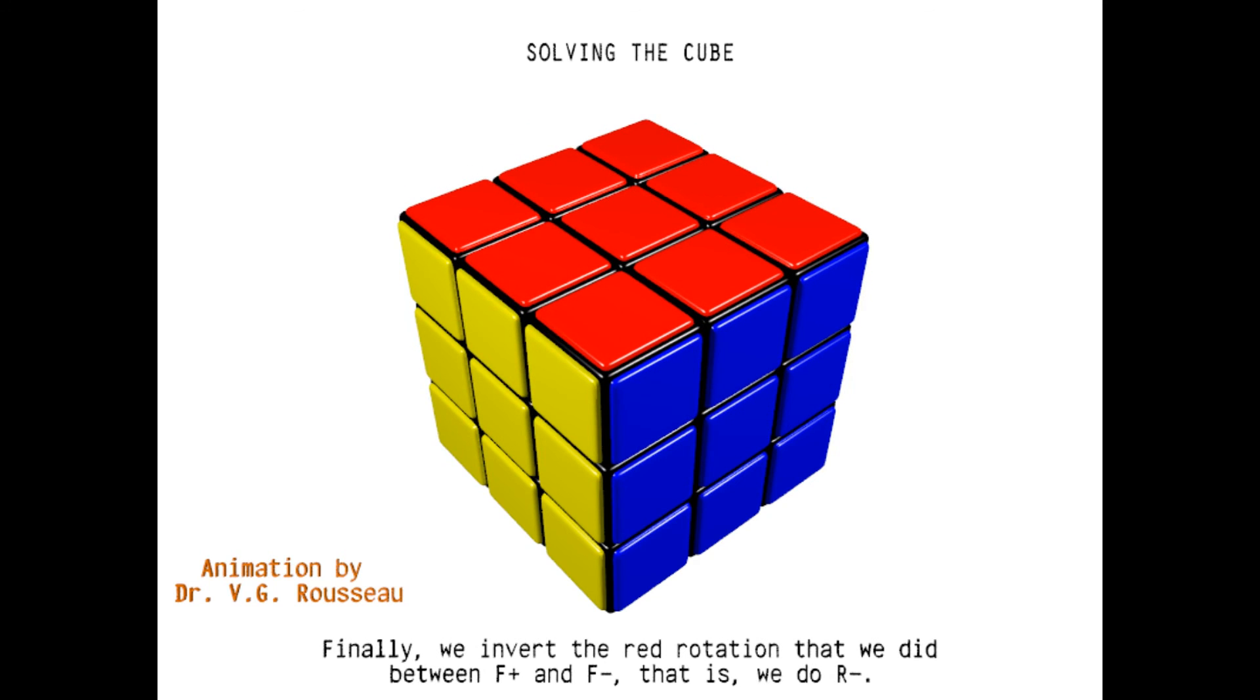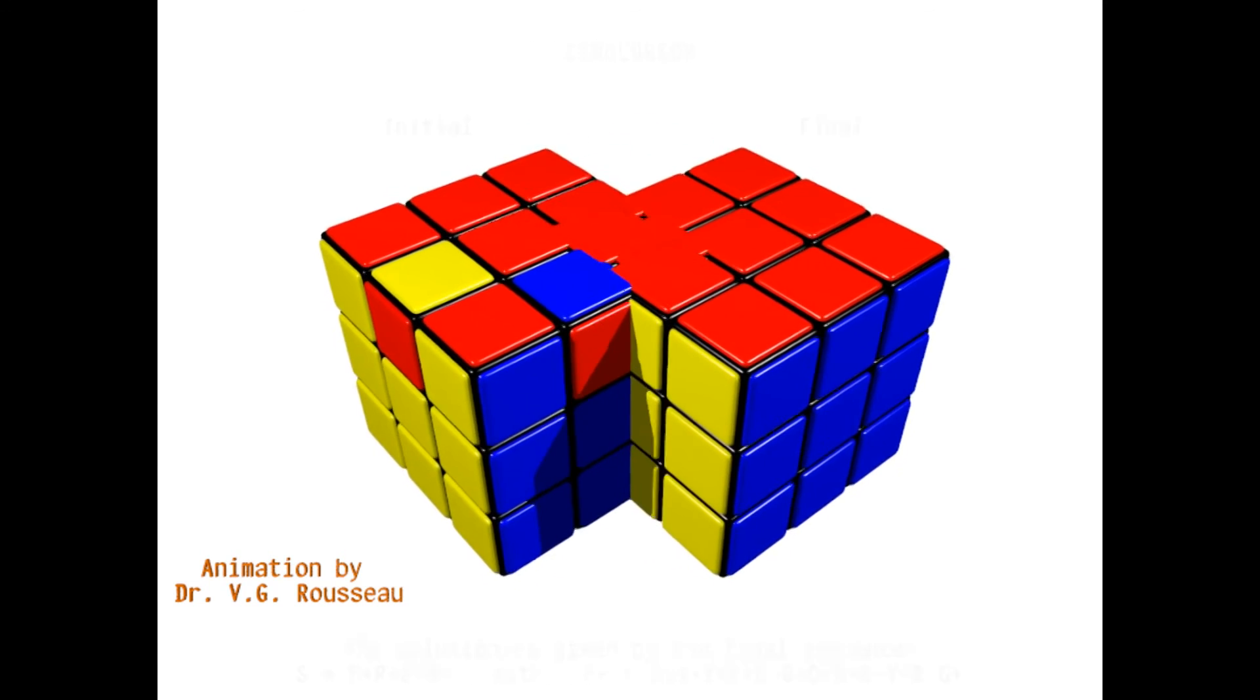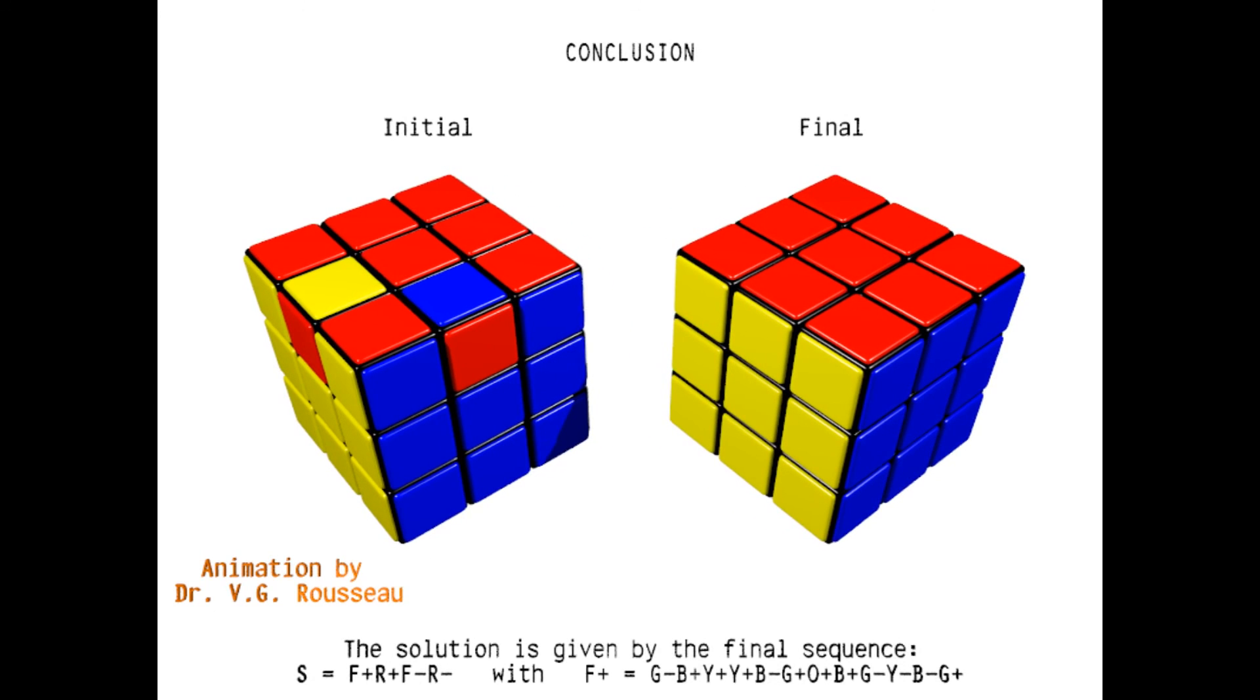It's a child's play. To conclude this first part, we saw how two edge cubies can be flipped without modifying their positions and without messing up the rest of the cube. This allowed us to derive the formula that appears at the bottom. In the next part, we will see how to exchange the positions of four edge cubies.